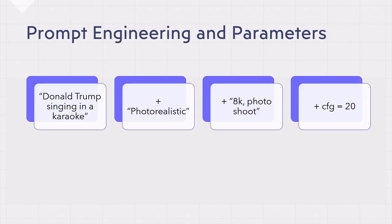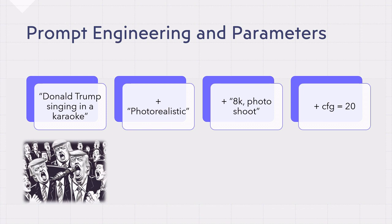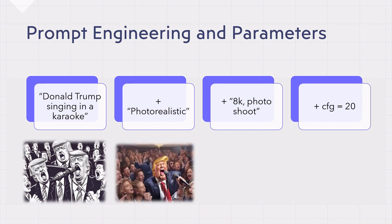Let's talk about prompt engineering and parameters. Imagine you start with a specific prompt: 'Donald Trump singing in a karaoke.' The first image shows Donald Trump with his mouth open — you have multiple Donald Trumps in a black and white image. So you say, I want something more photorealistic. You then get an image that is more colorful and slightly more photorealistic, though it's not very clear.